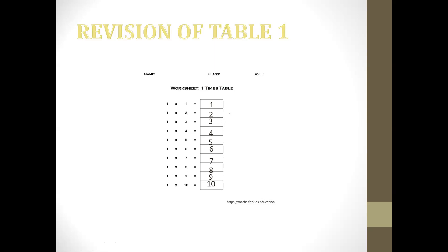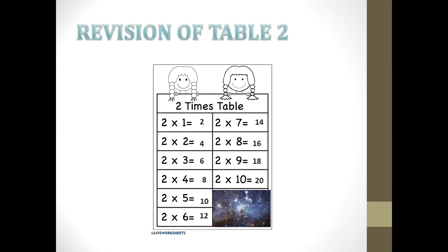Did you understand? Now we will revise the two times table. Two times one equals two. Two times two equals four. Two times three equals six. Two times four equals eight. Two times five equals ten.